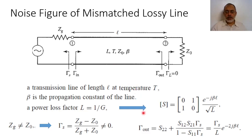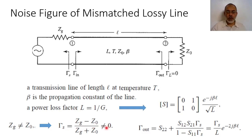The reflection coefficient at the output port γ_output is given by S22 plus (S12 · S21 · γs) over (1 − S11 · γs). The reflection coefficient at the source γs is simply (Zg − Z₀) over (Zg + Z₀). Because Zg does not equal Z₀, the value of γs is not zero. If we substitute γs and note that S22 is zero, we can calculate γ_output.